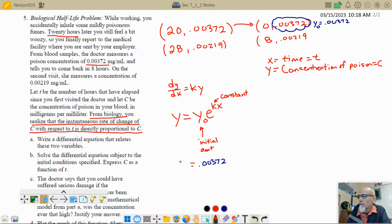And then on the other side, I still have a y there, and then I've got e to the kx. So I've got to find my k still. So what I'm going to do to find the k value is I'm going to take this stuff, this information right here, and I'm going to stick 8 in for x. So 8 is going in right there, and 0.00219 is going in for my y value. So 0.00219 equals 0.00372e to the 8k, and we're going to solve this.